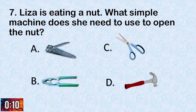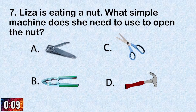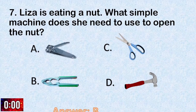Number seven: Liza is eating a nut. What simple machine does she need to use to open the nut? The correct answer is letter B.